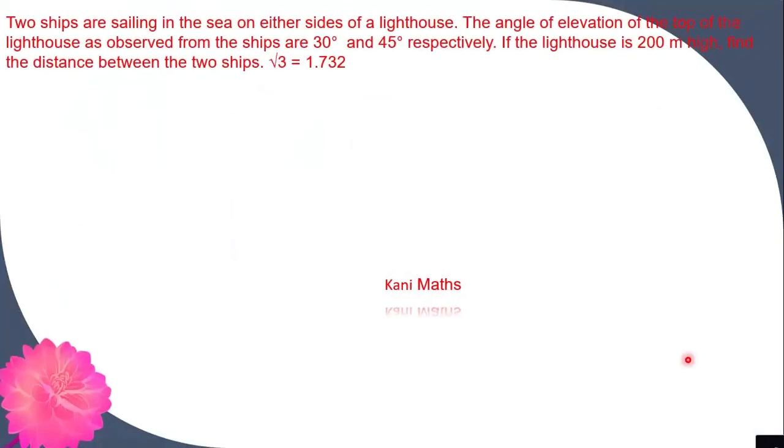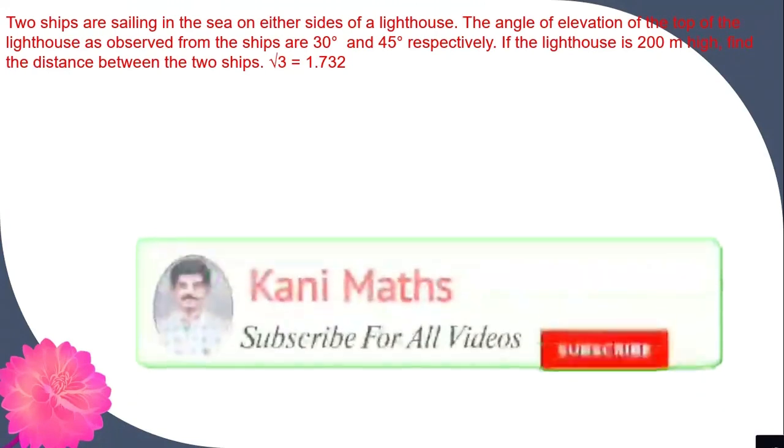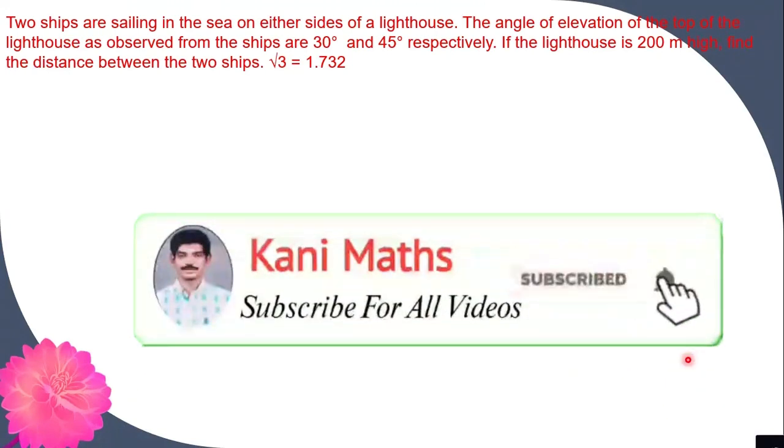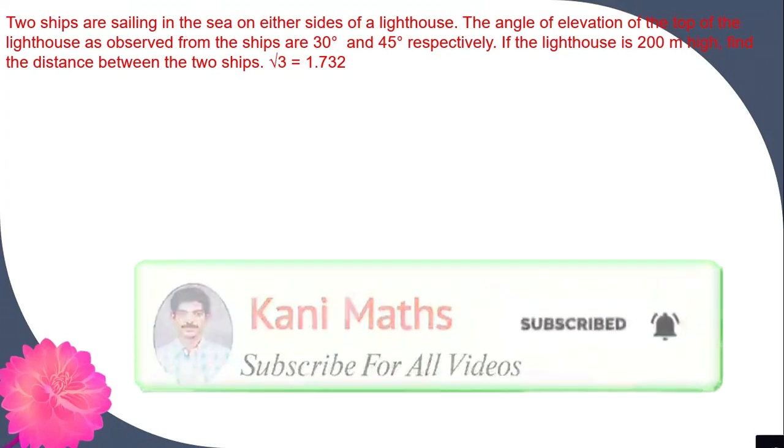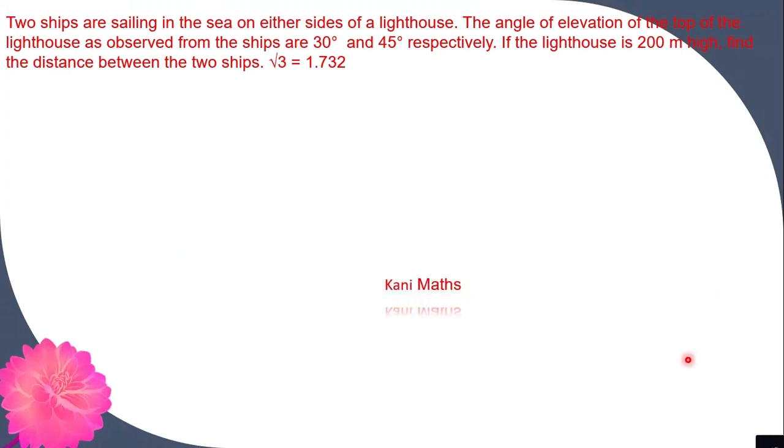Now let's go to the problem. Two ships are sailing in the sea on either sides of a lighthouse. The angle of elevation of the top of the lighthouse as observed from the ships are 30 degrees and 45 degrees respectively. If the lighthouse is 200 meters high, find the distance between the two ships.